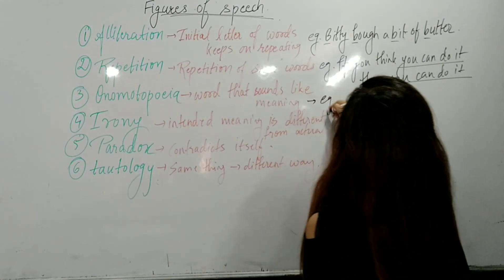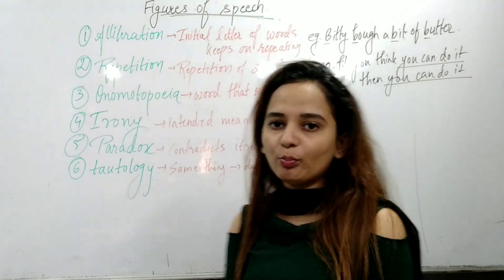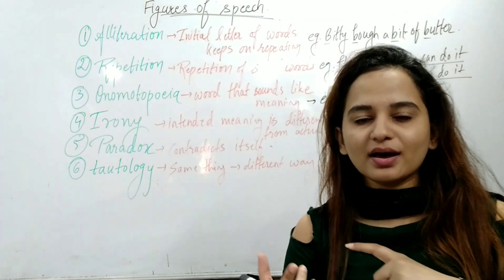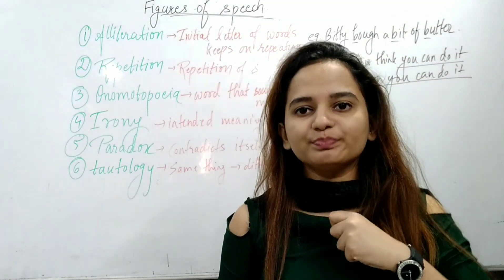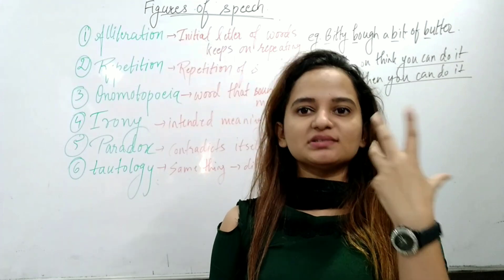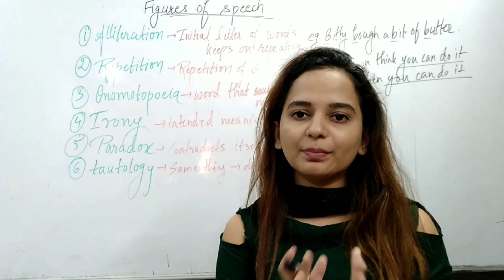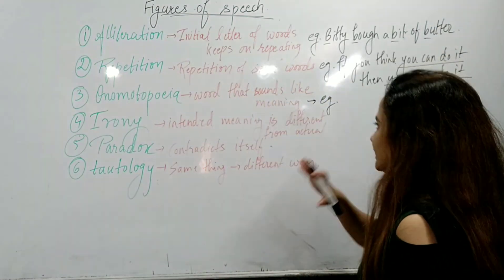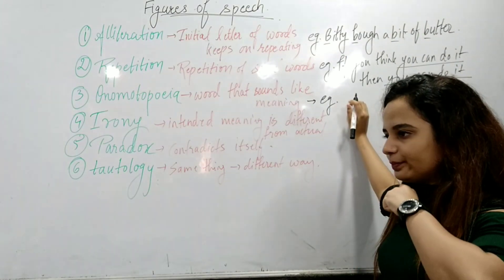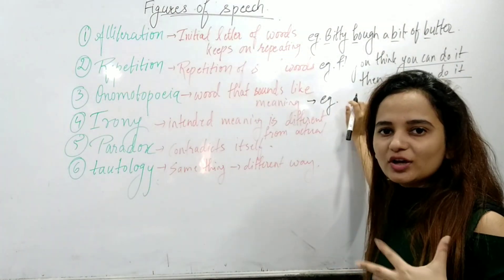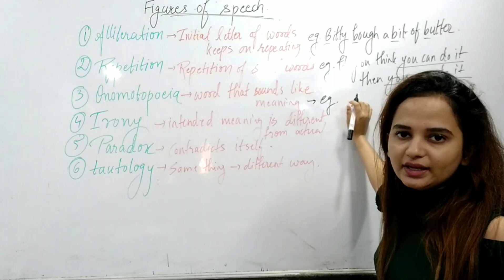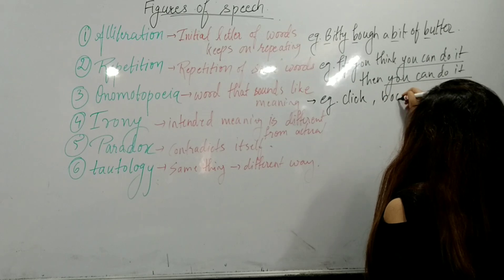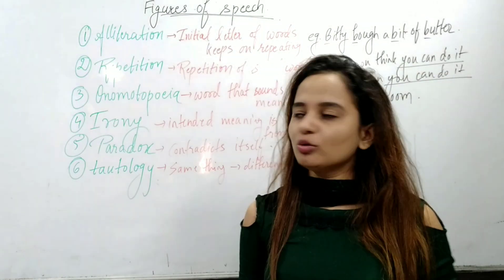Next is onomatopoeia. Onomatopoeia is a figure of speech found in words where the word we pronounce sounds like what it means — the sound is found within the word itself. When we pronounce it, we can sense its meaning. For example: 'click' or 'boom.' These are examples of onomatopoeia.